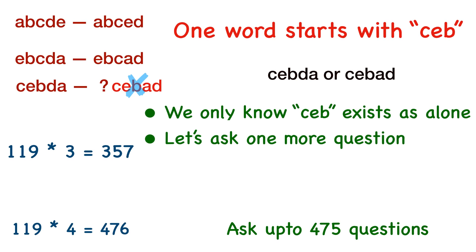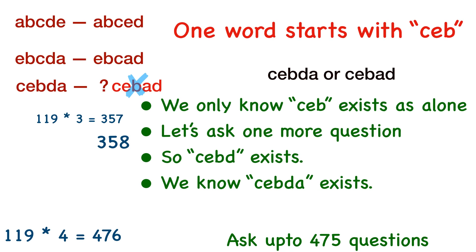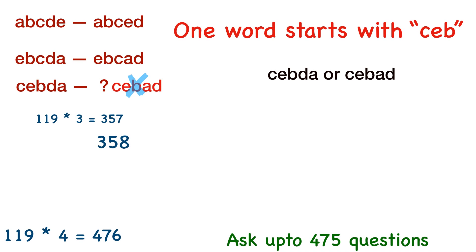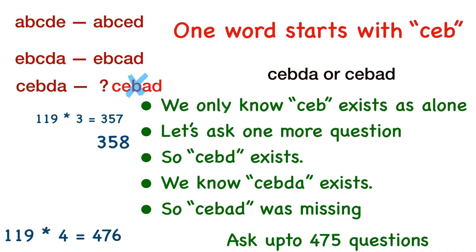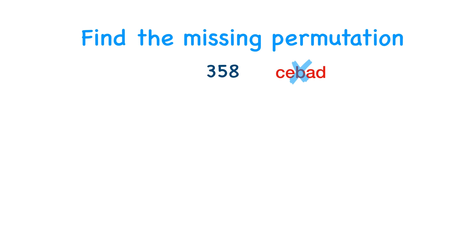So we ask one more question: give us the fourth character of the word starting with CEB. We find it's D, meaning CEBD also exists in the list. Since we know the first four characters are C, E, B, D, the only missing character is A — so that word is CEBDA. This rules out one possibility, and now we know with certainty that CEBAD is the missing permutation. We solved everything in just 358 questions — a massive improvement from the original 476.